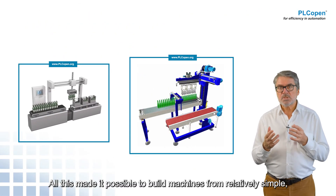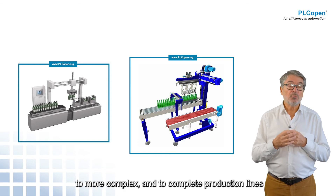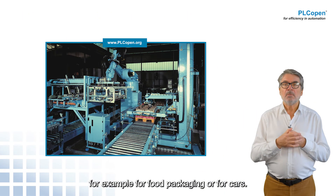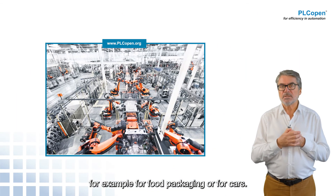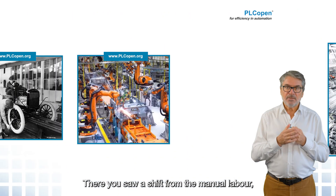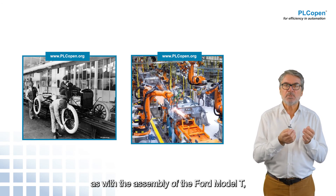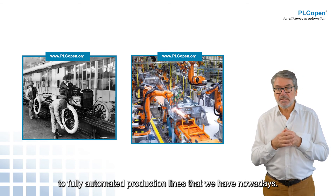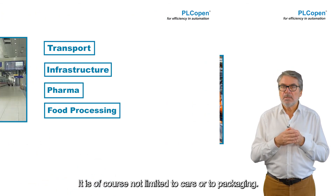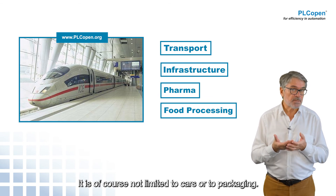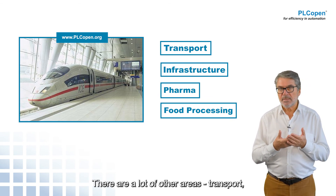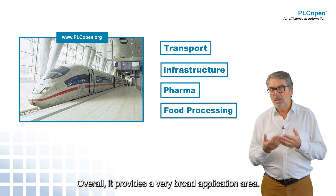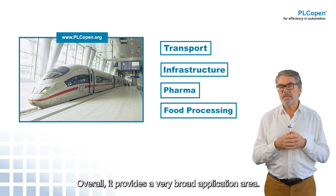All this made it possible to build machines from relatively simple to more complex to complete production lines — for example for food packaging or for cars. There you saw a shift from the manual labor as with the assembly of the Ford Model T to fully automated production lines that we have nowadays. It is of course not limited to cars or to packaging. There are a lot of other areas: transport, control of bridges, pharmaceuticals, food processing — overall a very broad application area.